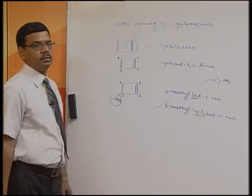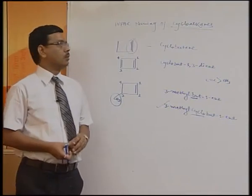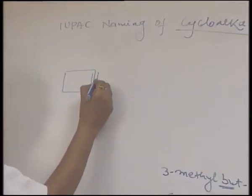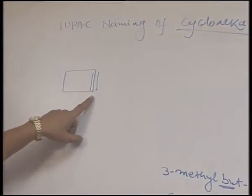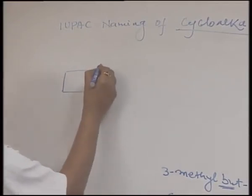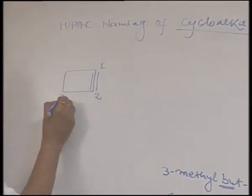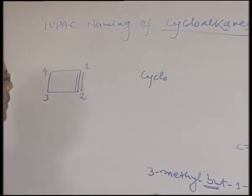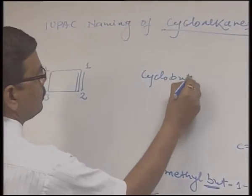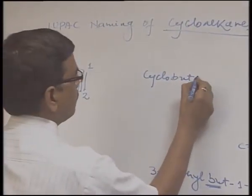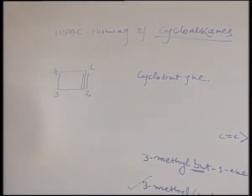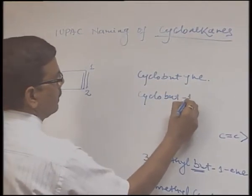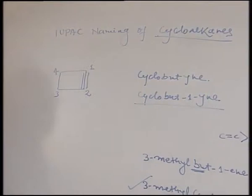Now let us move to another type of compound known as cycloalkynes, which contain a triple bond. Suppose I have written this compound — it has a triple bond, so it comes under cycloalkynes. The naming rule is the same as for cycloalkenes. The name will be: first write cyclo, then the word root but for 4 carbon atoms, then the last word YNE — that is cyclobutyne. You can also write cyclobut-1-yne to indicate the position of the triple bond.